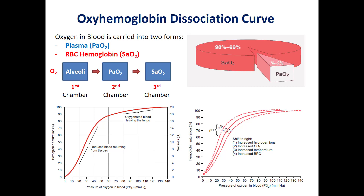So the oxygen will pass from the first chamber, the alveoli, to the plasma of the blood.